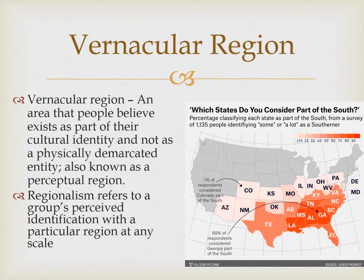A vernacular region is an area that people believe exists as part of their cultural identity and not as a physically demarcated entity. It's also known as a perceptual region — and it goes by perceptual region probably more often than vernacular. Perceptual regions can include people and their cultural traits, things like dress, food, language, or religion; places and their physical traits like mountains, plains, or coasts; and built environments like windmills, barns, skyscrapers, or beach houses.